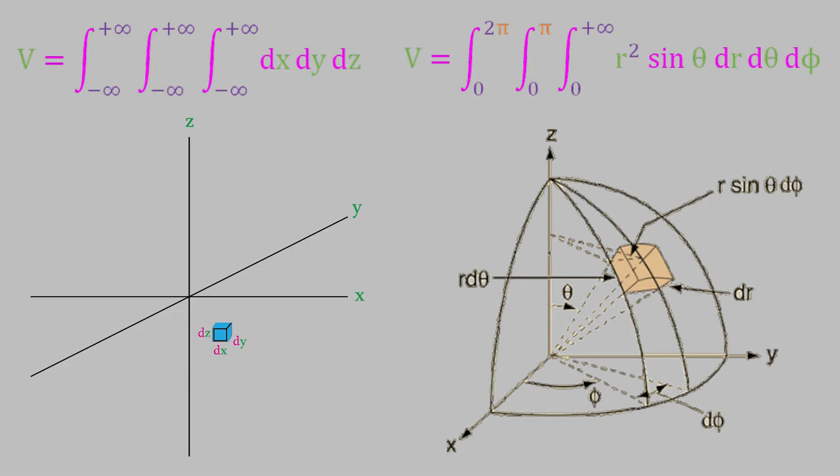Every three-dimensional integral you write in spherical coordinates should end with r squared sine theta, dr, d theta, d phi. Just as you would write every integral in Cartesian coordinates with dx, dy, dz. The r squared sine theta part is a necessary part of every three-dimensional integral in spherical coordinates, and should be there in addition to whatever else you're taking the integral of.